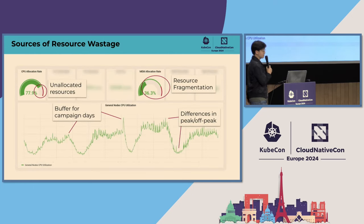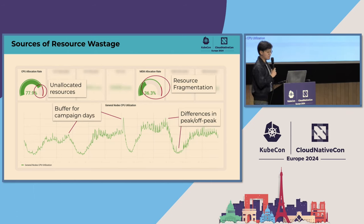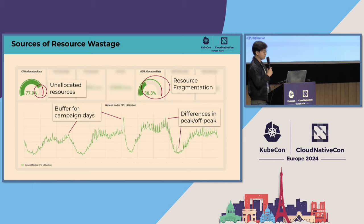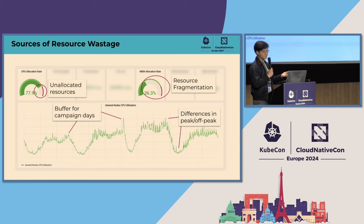By observing resource utilization patterns within our clusters, we found several common cases of resource wastage which could lead to underutilized resources. In Shopee, our resources are provisioned based on the requirement to support campaign events that happen around once a month. Most of our critical services need to have a sufficient buffer, and since we host our machines on-premise, provisioning a large quantity of pods on short notice is usually quite impractical. Hence, we usually have to reserve some resources that remain unallocated in case we need to massively scale up during unexpectedly large traffic spikes.